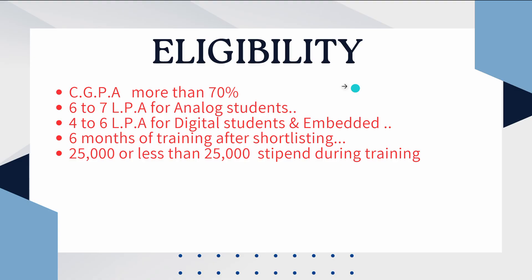Let us see the eligibility. CGPA should be more than 70 percentage. Coming to the LPA: for analog students it is six to seven LPA, and four to six LPA for digital and embedded students. After shortlisting, there are six months of training. If you got shortlisted, they will provide a six-month internship with a stipend of 25,000 or less than 25,000 per month during training.